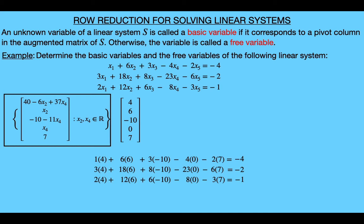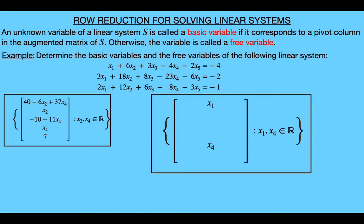Now let me point out that any time a system is consistent and has at least one free variable, the system will have infinitely many solutions, and there will be multiple parametric descriptions for the solution set. So even though we chose to describe it using the free variables as the parameters, this is not the only way to do it. For instance, we could take x sub 1 and x sub 4 variables to be our parameters. Then using the first equation, we can solve for x sub 2 in terms of x sub 1 and x sub 4, and we would get this equation for the second entry. For the third entry, since this equation only relies on the x sub 4 parameter, the equation for the third entry will remain the same. And then the fifth entry was just a constant, so that will stay the same as well. So we get this different parametric representation for the solution set. Both of these describe the same solution set, just written in different ways. We usually just adopt the standard notation, which is to write the parametric description in terms of the free variables.